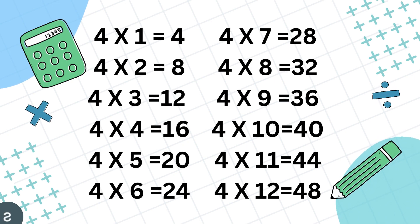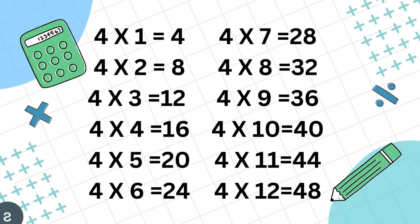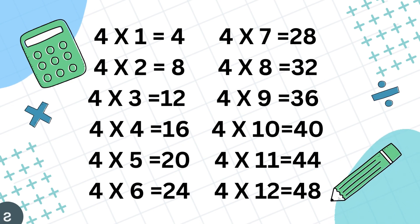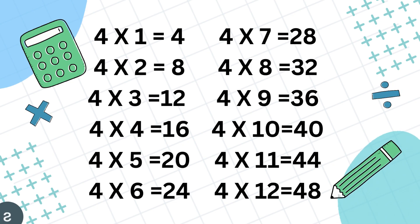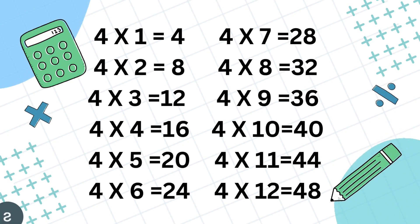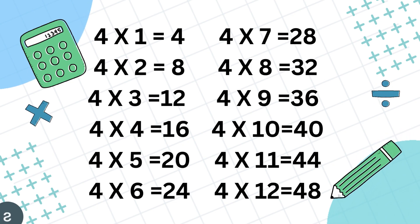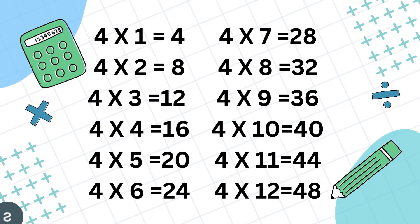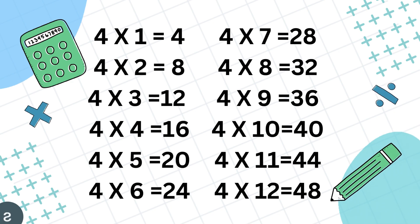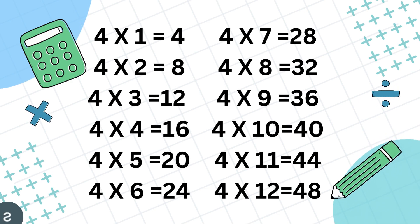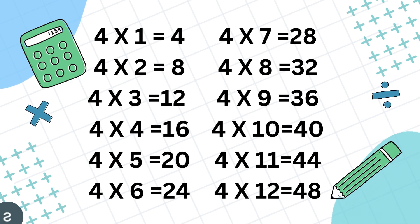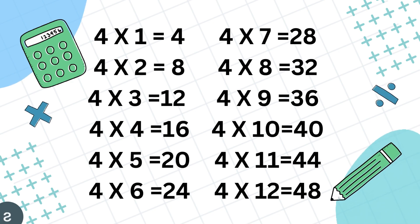4 7's are 28, 4 8's are 32, 4 9's are 36, 4 10's are 40, 4 11's are 44, 4 12's are 48.